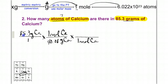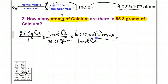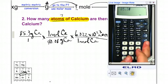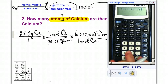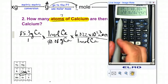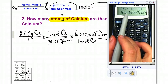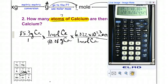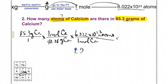It's always one mole with the exception of the given. From one mole, I go to atoms using Avogadro's number: 6.022 times 10 to the 23rd atoms. Now calculate: 85.3 divided by 40.08 times 6.022e23 equals — rounding to 3 sig figs — 1.28 times 10 to the 24 atoms of calcium.